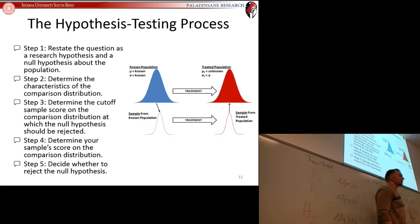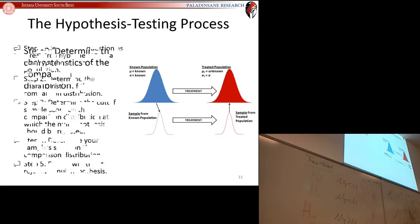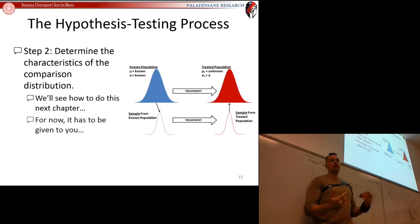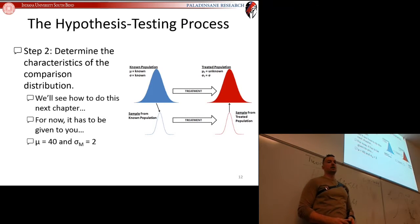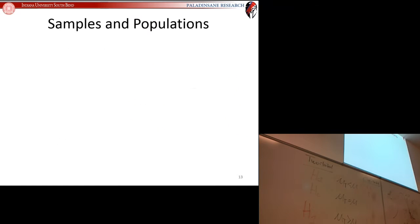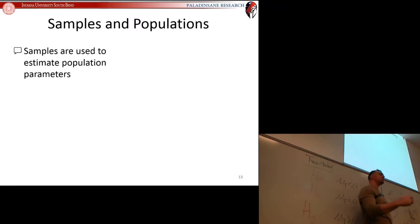On the hypothesis testing five-step procedure, up until now for step two—determining the characteristics of the comparison distribution—I've always said we'll see how to do this in the next chapter, but for now it has to be given to you. Now we're finally going to figure out how you, on your own, can get those two numbers: the mean of your comparison distribution and the standard deviation of that comparison distribution.